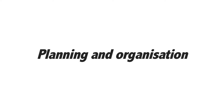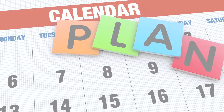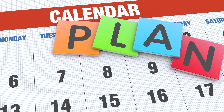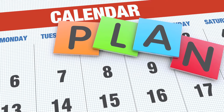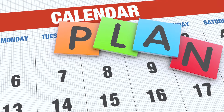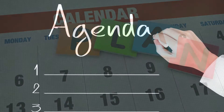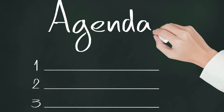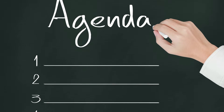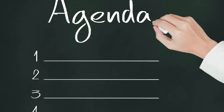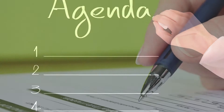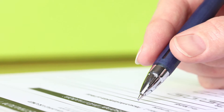Planning and Organization. Affected individuals find it difficult to organize their time and to plan out tasks. For example, they'll have problems keeping their agenda up to date, following a recipe, or filling out forms.